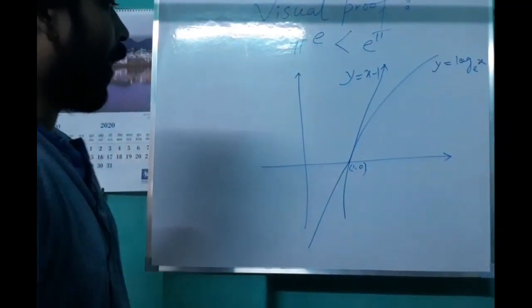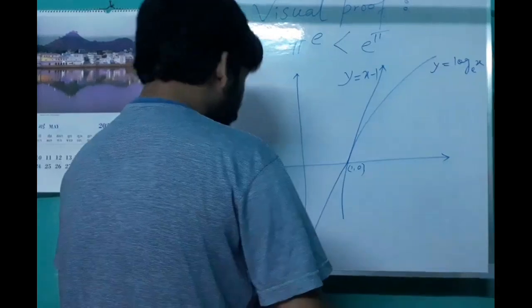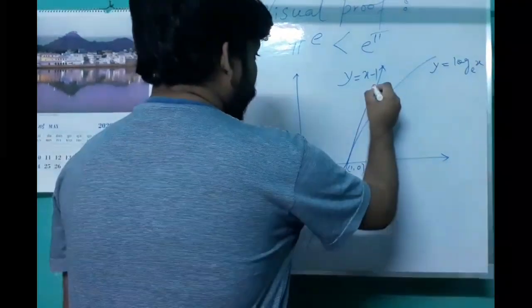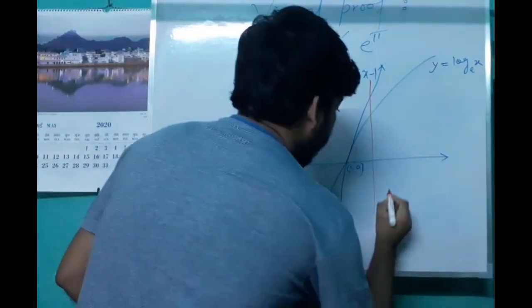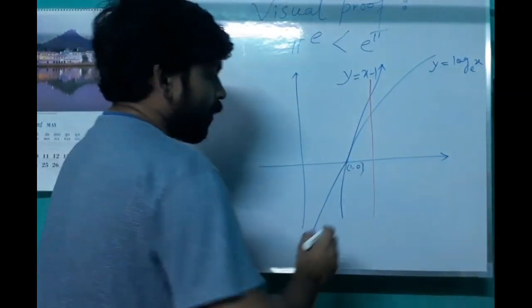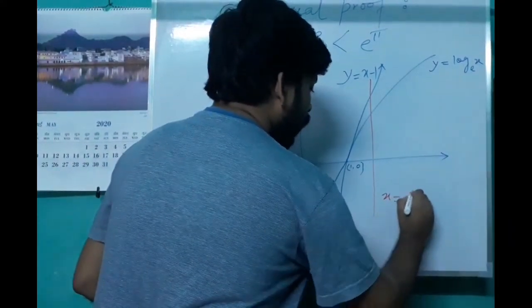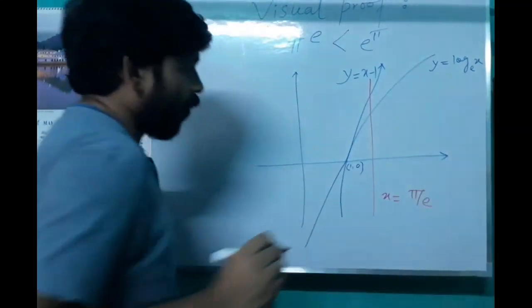Now we draw another line. That line is parallel to the y-axis. The equation of the line is x equal to pi by e, this line.